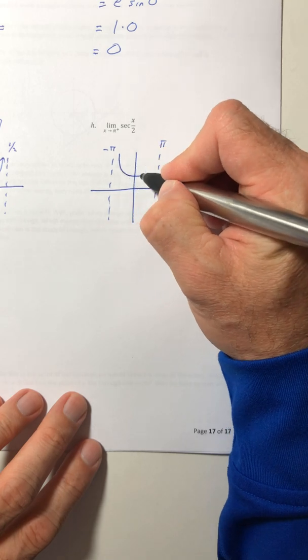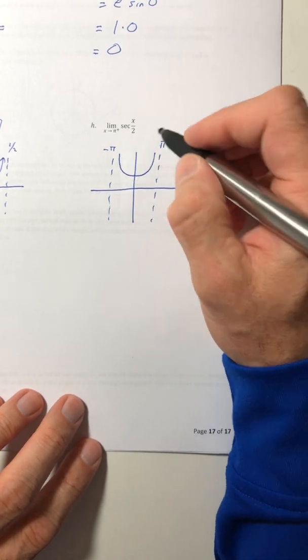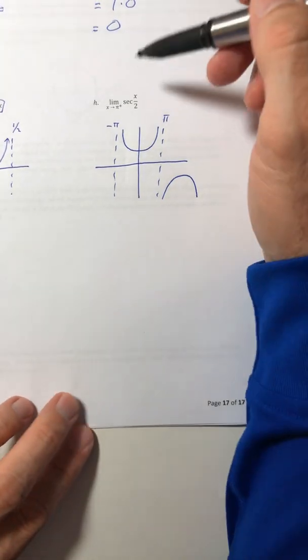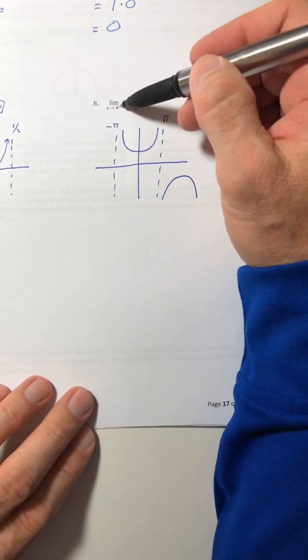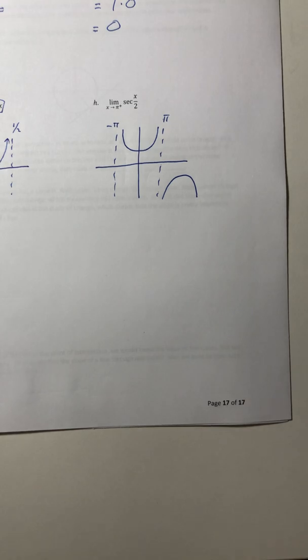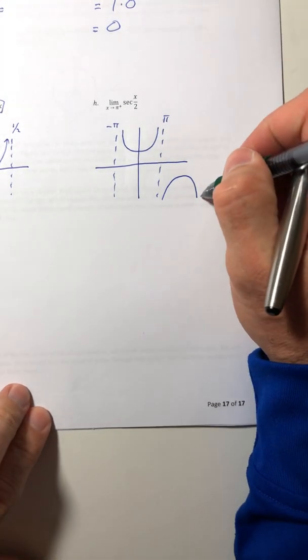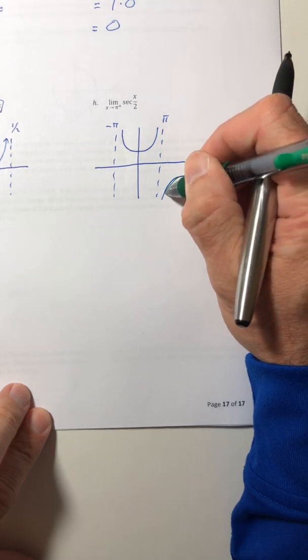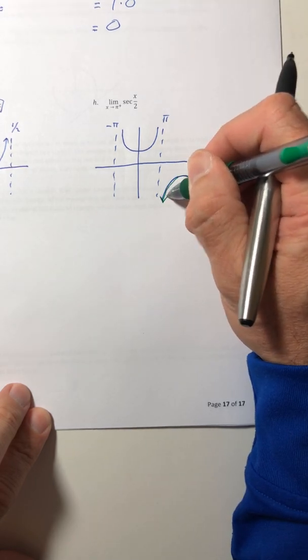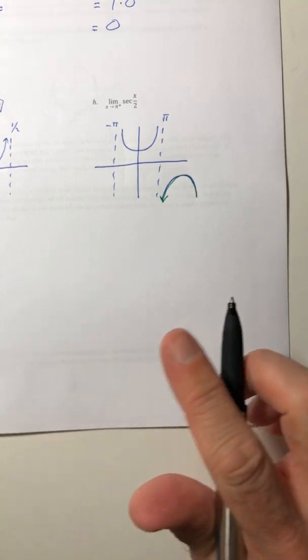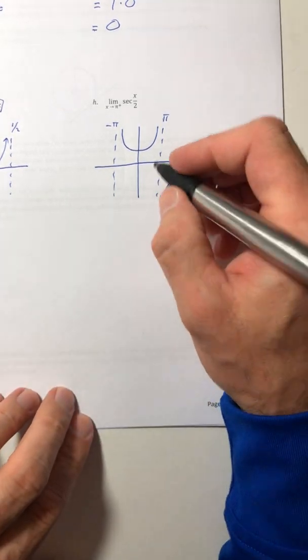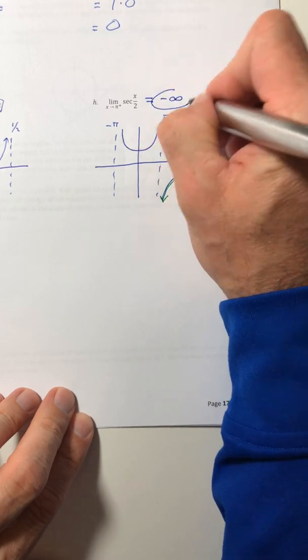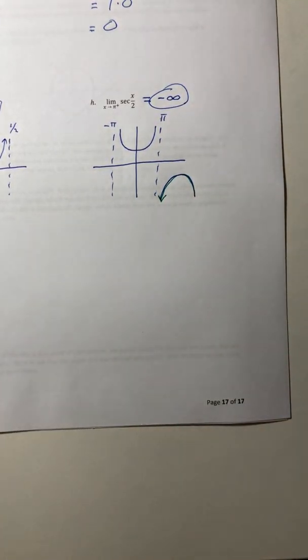And then secant is those parabolas that alternate like up and then down. So as x approaches pi from the right, so that would be on this curve, and going off that direction. So that is equal to negative infinity.